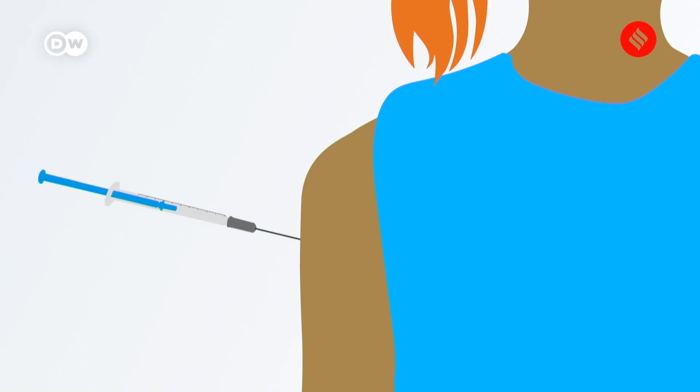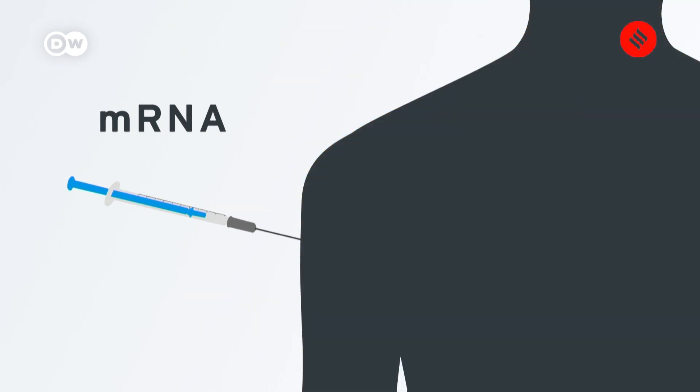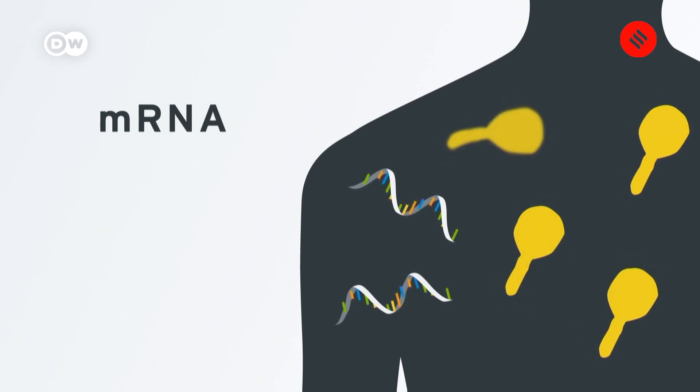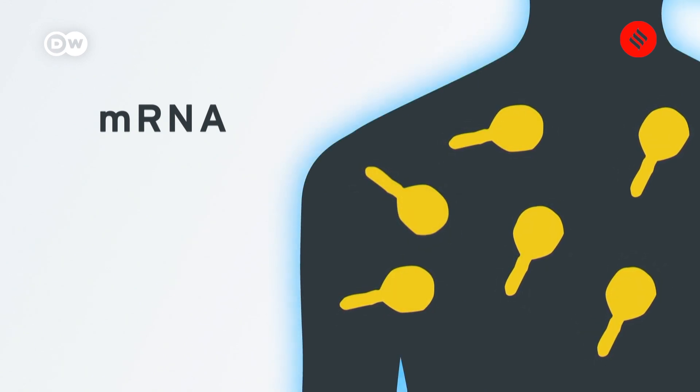They work by giving the body's immune system a preview of potentially dangerous invaders. A dose contains many copies of a short stretch of precise genetic information, the messenger RNA. It induces cells to start making proteins that are otherwise only found on a specific pathogen, like the proteins that stud the surface of SARS-CoV-2, the virus that causes COVID-19. Then, when the immune system encounters the virus, it quickly recognizes the invader and wipes it out.